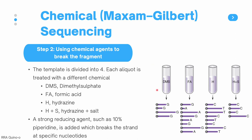In this figure, you can see our four tubes, each containing one of the different chemical agents. We add our template DNA to each tube and incubate it for a period of time. Then a strong reducing agent, such as 10% piperidine, is added, which breaks the strand at specific nucleotides. What you are left with is different fragments of different sizes, each ending in a specific nucleotide depending on which chemical it was incubated with.